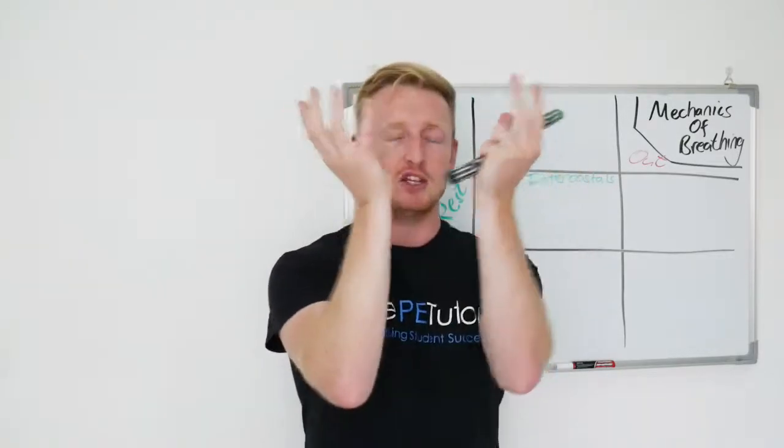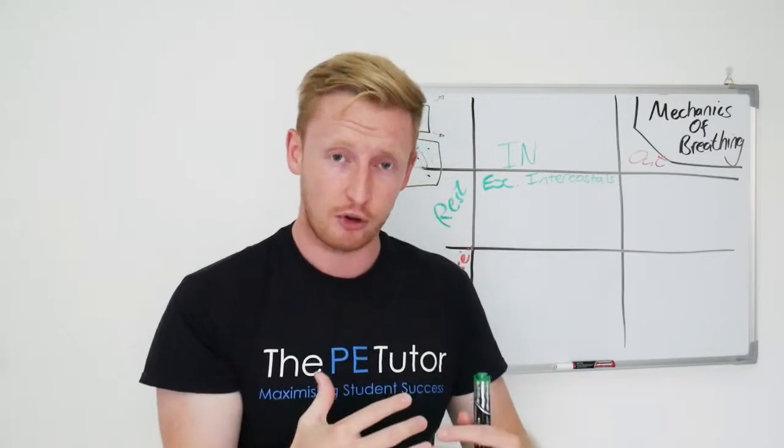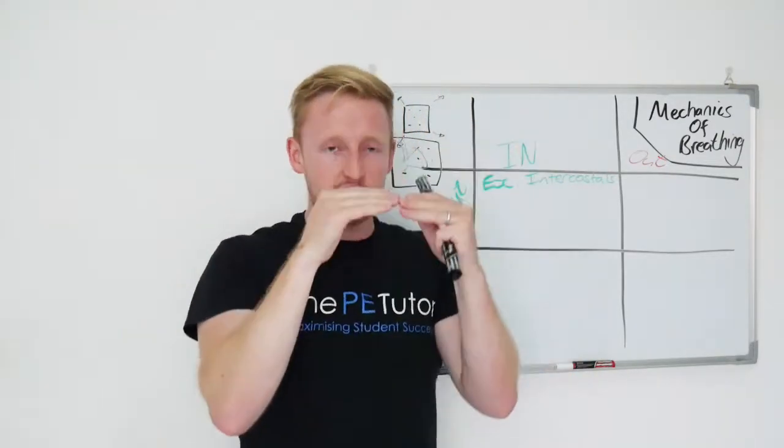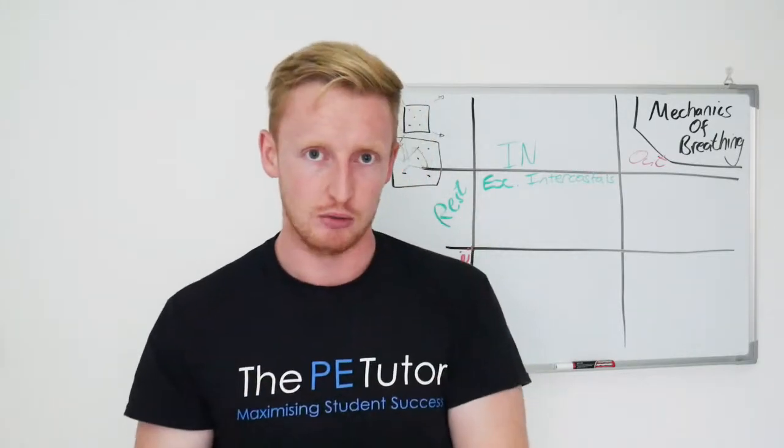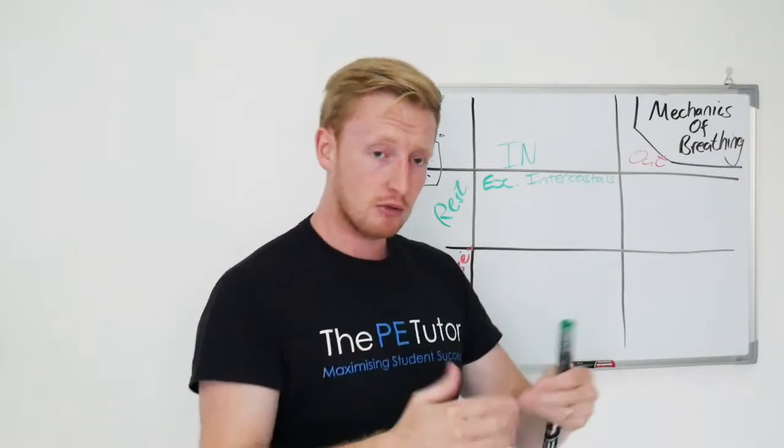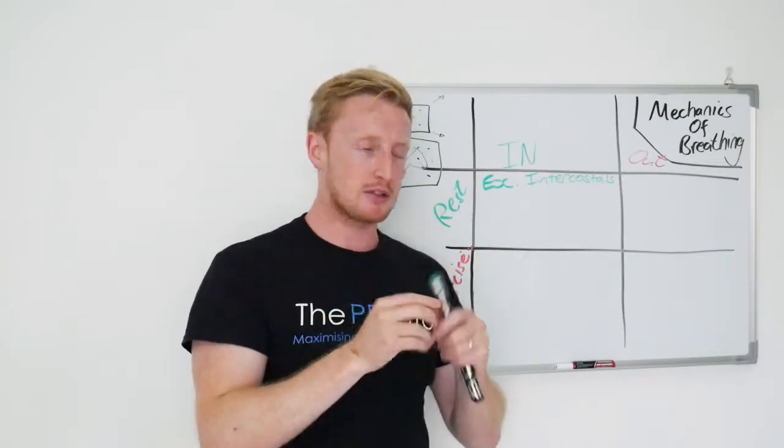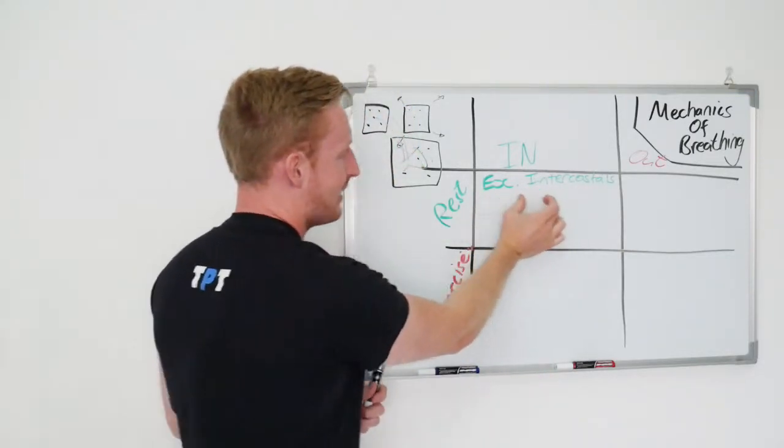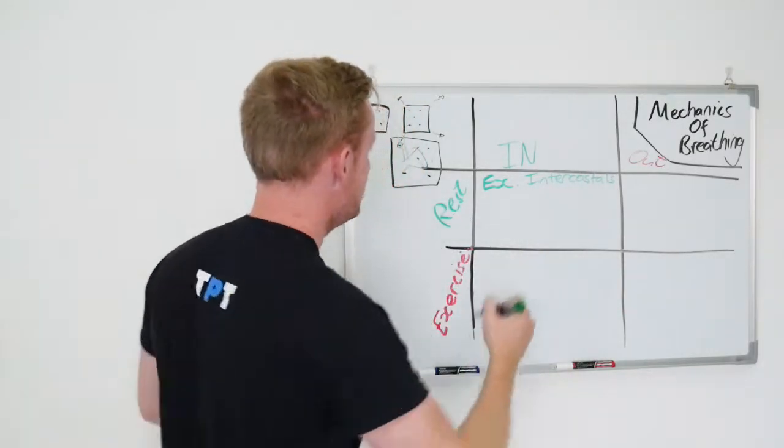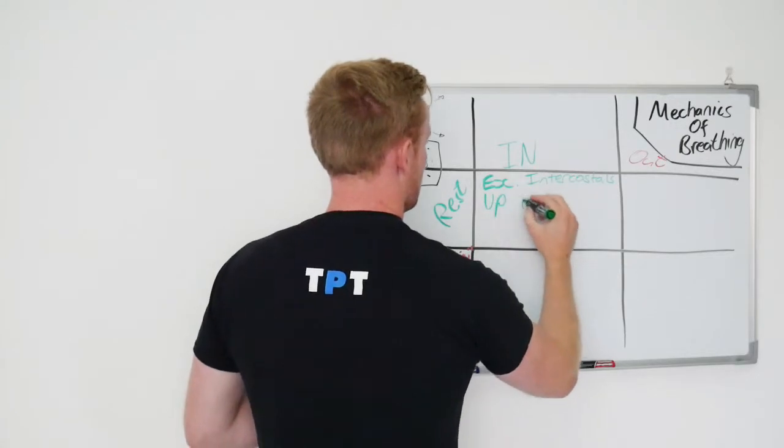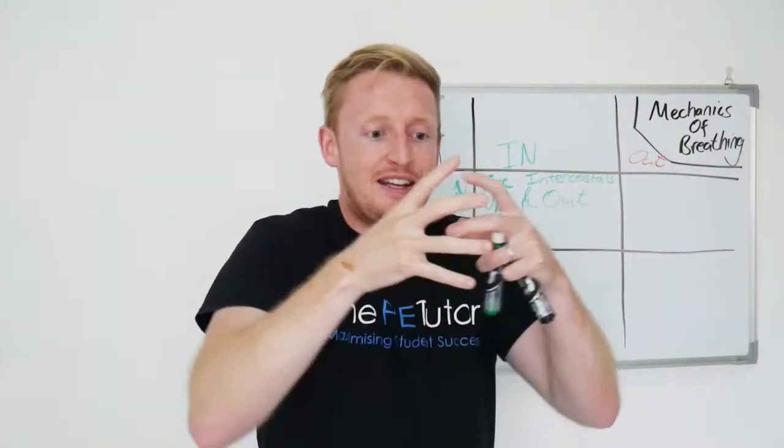If you think of a rib cage in 3D, on the top or on the outside surface you've got external intercostal muscles and then on the internal surface, so the ones between the ribs and the lungs, you've got internal intercostals. If we contract the external intercostal muscles, they're going to pull that rib cage up and out. That rib cage is going to move, it's going to expand.